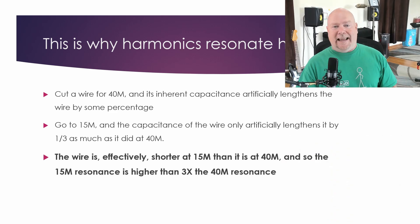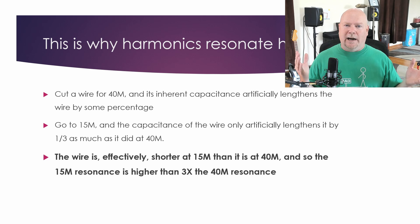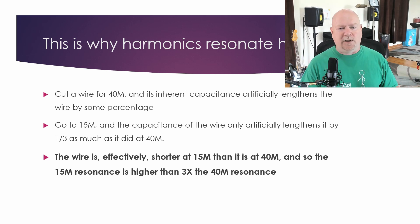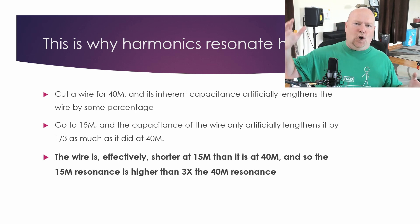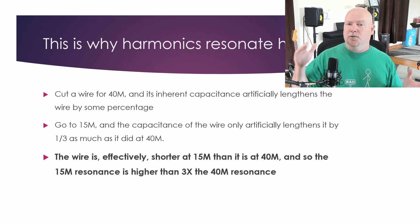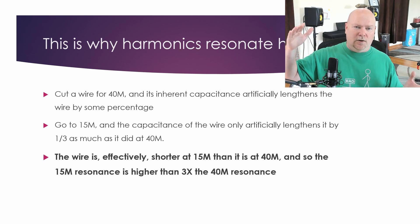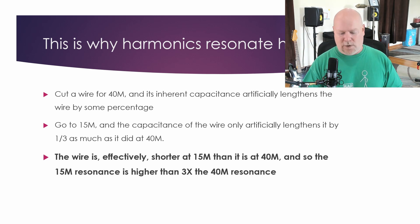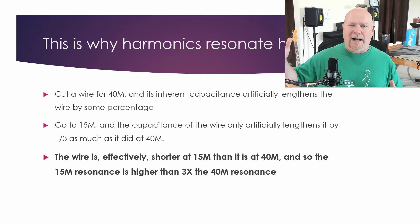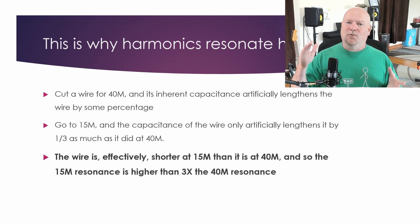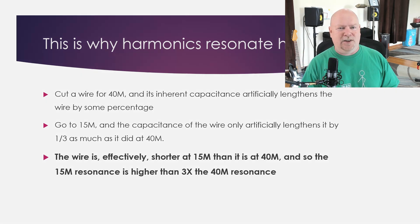This is why your harmonics don't land where you think they're going to land. You cut your wire for 7.1 or 7.2 megahertz on the 40 meter band, and the capacitance inherent in the wire is artificially making it longer. So you physically cut it shorter to get the combination of physical length and inherent capacitance to resonate at the frequency you want. But then you go up to the 15 meter band and the capacitance isn't stretching your wire out anymore — you just have a wire cut short, so it resonates higher than it should on the 15 meter band because it's not being artificially lengthened. That's my story and I'm sticking to it.